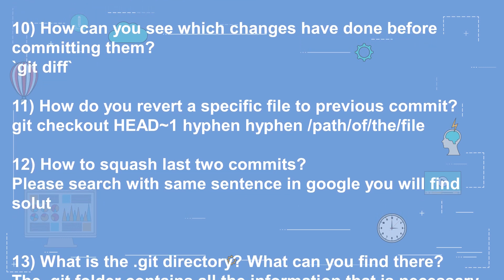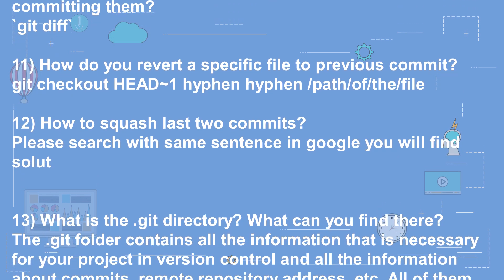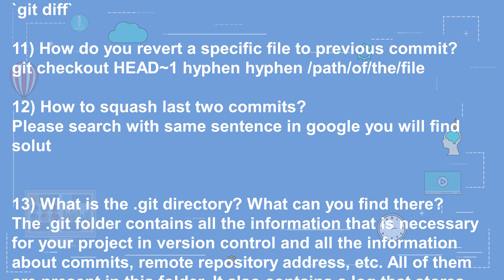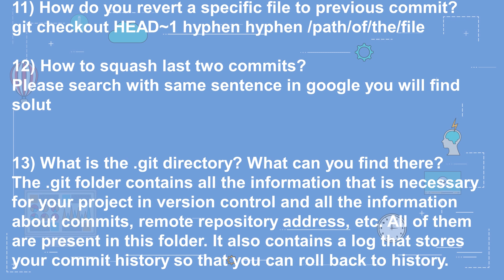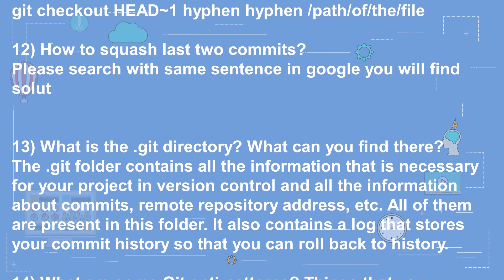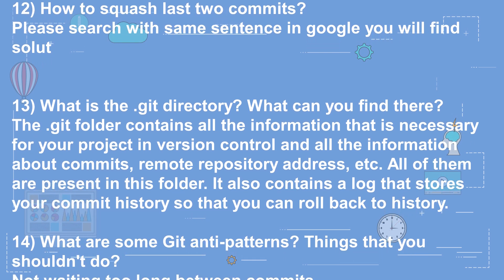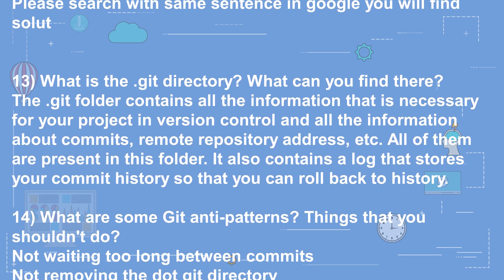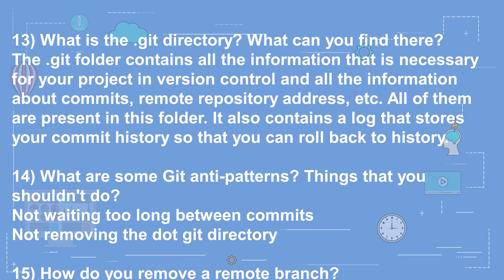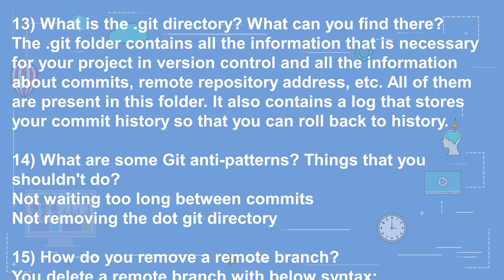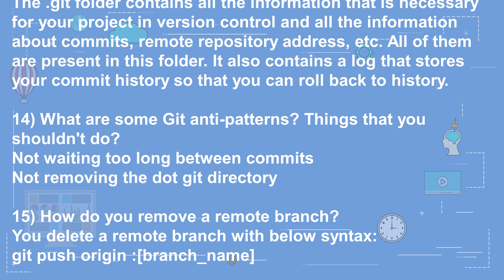Question 12: How to squash the last two commits? Please search with the same sentence in Google — you will find the solution. Question 13: What is the .git directory and what can you find there? The .git folder contains all the information necessary for your project in version control — all information about commits, remote repository address, etc. It also contains a log that stores your commit history so that you can roll back.